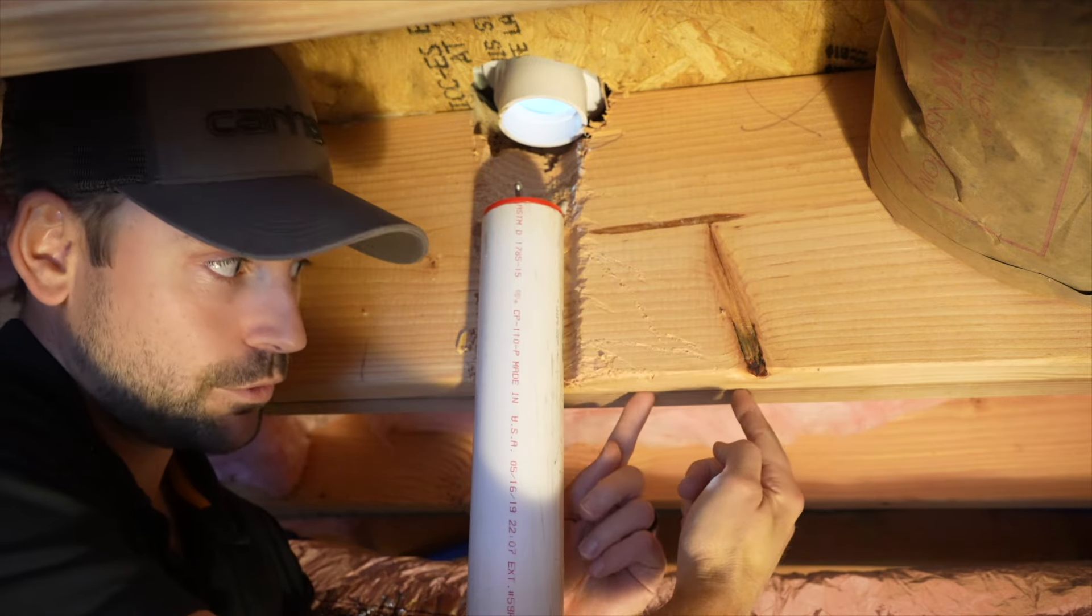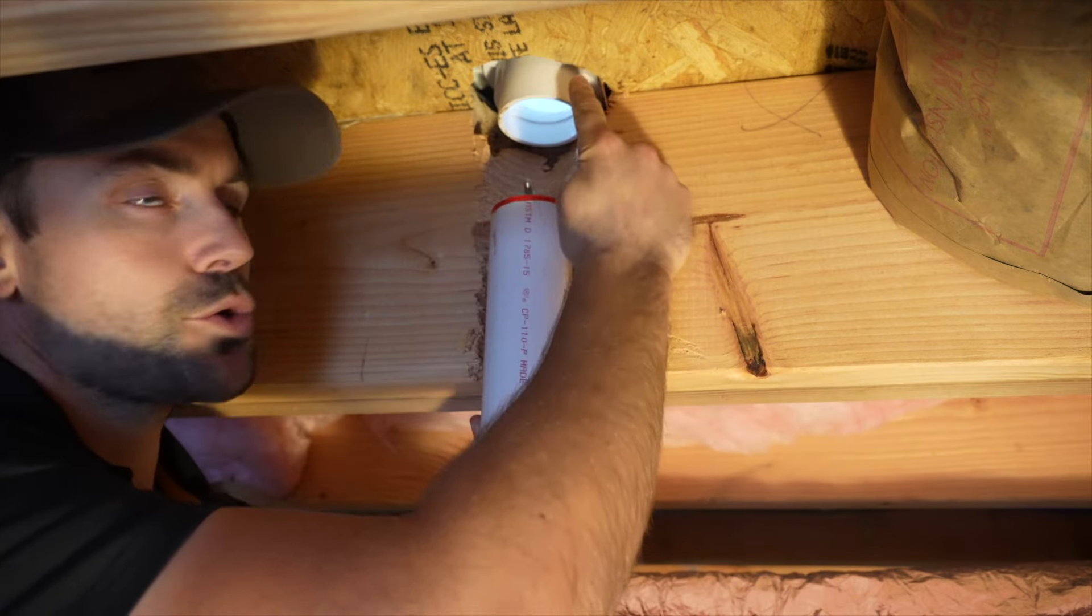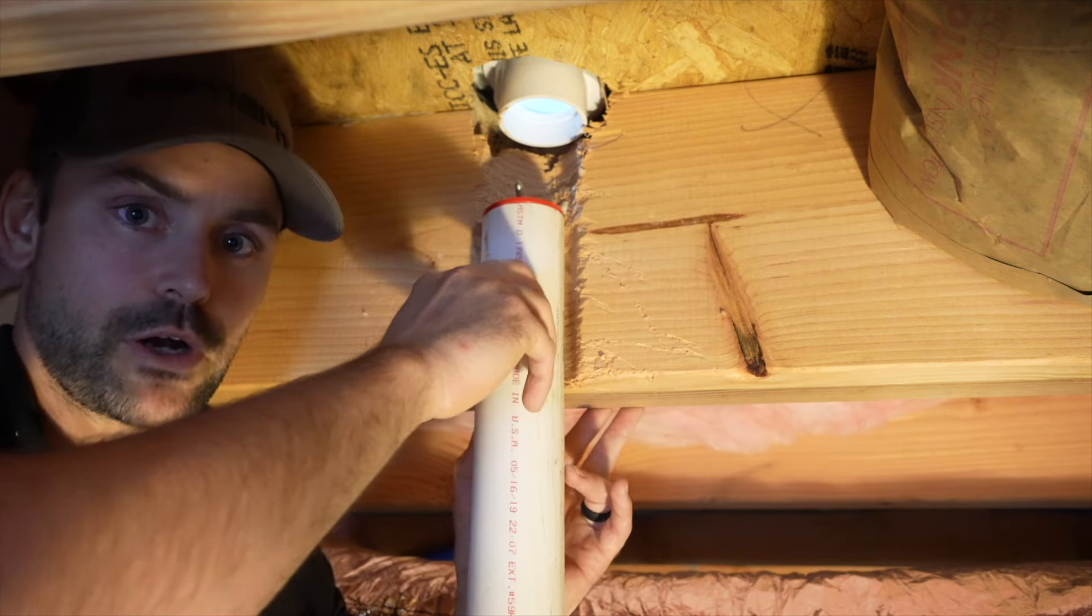I put another floor joist directly beside it to help strengthen it. The goal here is to join this drain to this two inch pipe. Now let me show you the trap that's down below.